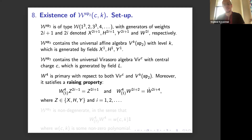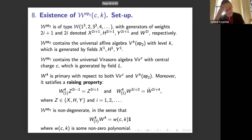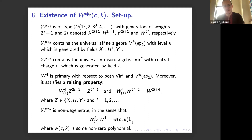The raising property creates some technical difficulty but is a very helpful assumption — I believe without it one cannot prove such a thing exists. The last assumption is non-degeneracy: the field W4's leading pole is not zero. Otherwise there would be issues with simplicity of the algebra, and we want it to be simple.